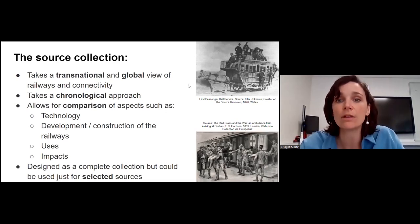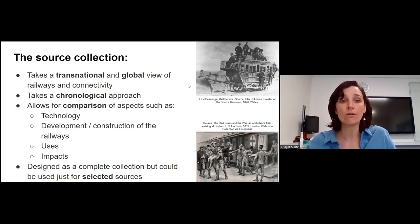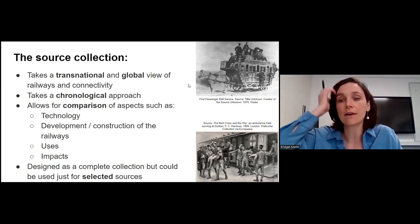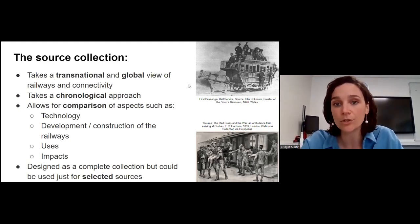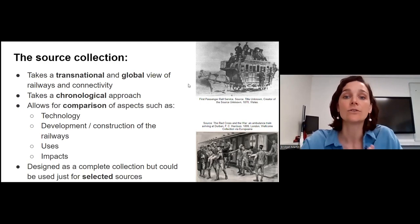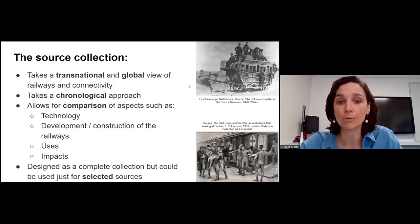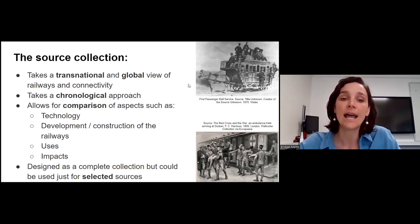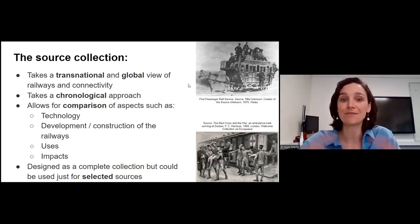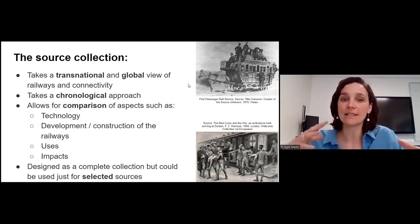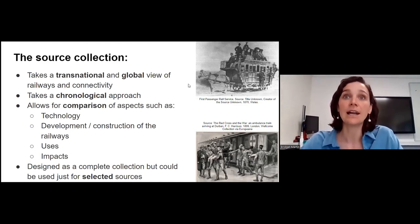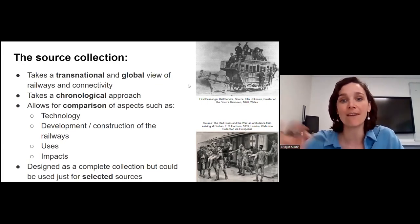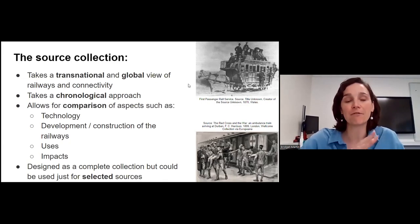The source collection takes a transnational and global view of railways and connectivity. It's not only looking at railways within Europe — there are sources relating to the Thai-Burma railway, the Japanese bullet train, and the partition of India and Pakistan. It attempts to be as global as possible and takes a broadly chronological approach, allowing us to zoom out both geographically and chronologically to look at evolution and developments over time.